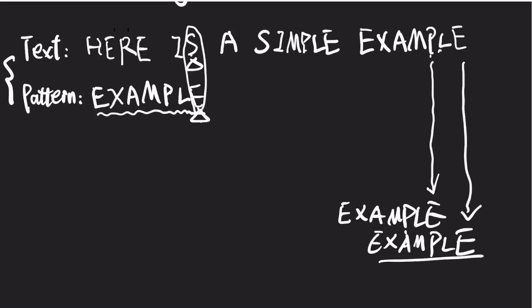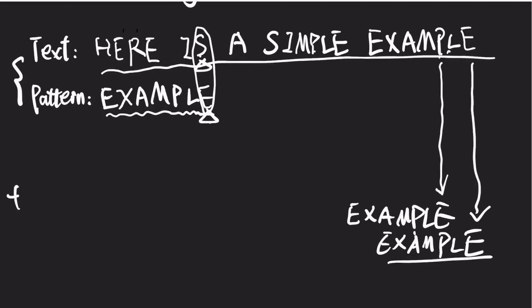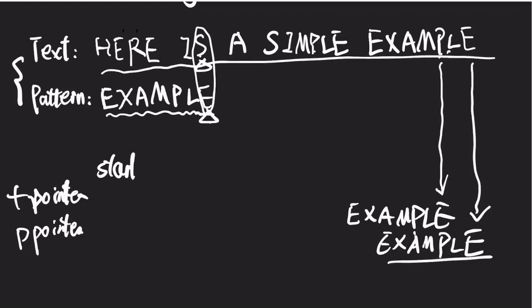The main function of the Boyer-Moore algorithm is to loop through the whole text string. So naturally we need a pointer for the text, and also, because we need to compare with the pattern string, we need another pointer for the pattern. We also need the start position. We need to compare from the rightmost position every time, so the start position is pattern.length minus one.